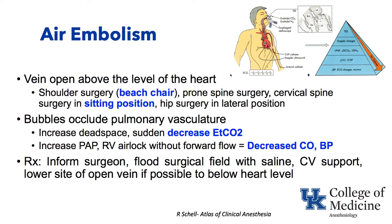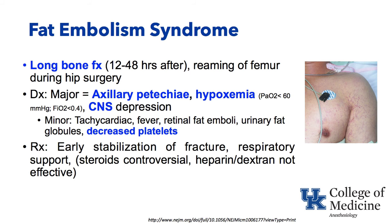The next topic is fat embolism syndrome. If a patient has a long bone fracture, they can get fat embolism syndrome, presenting often 12 to 48 hours after, say, a traumatic femur fracture or possibly reaming of a femur during hip surgery. There are major and minor criteria for diagnosing fat embolism syndrome. The major criteria include axillary petechiae — fat globules blocking those capillaries in the chest wall and axilla.